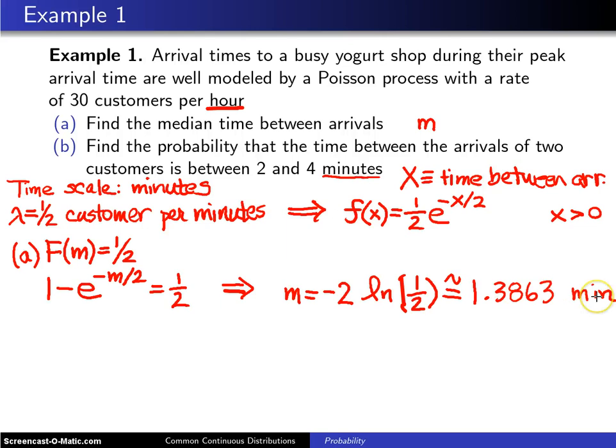There, that's better. Now for part b, we want to calculate the probability that the time between arrivals of two customers is between two and four minutes. That can be written as the probability that the random variable X lies between two and four.